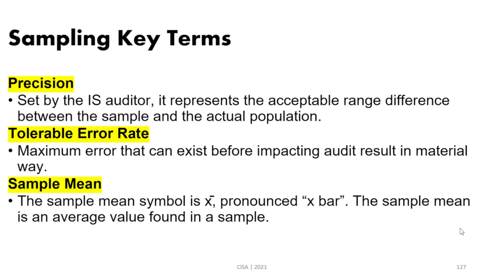There are other terms related to sampling in the textbook, but these are the most key terms to understand from an exam perspective. Pay attention to the confidence coefficient — it relates to the strength or weakness of controls. When controls are strong, the sample size is small, and sample size is proportional with the confidence coefficient. That was all for the sampling methodology part. I hope it was informative, and see you in the next video.